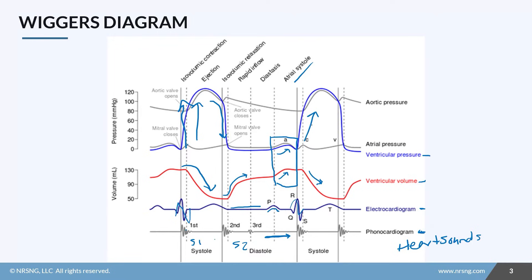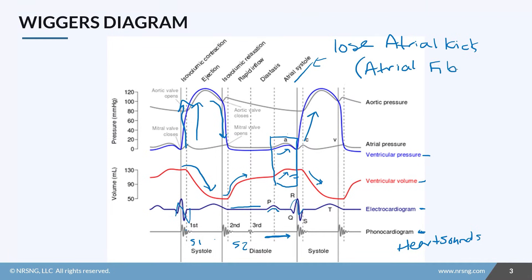Any patient who has issues with their atria and loses their atrial kick is going to have trouble with their overall cardiac output, because that last little bit of volume won't make it into the ventricles. The best example of this is somebody with atrial fibrillation. There's a cheat sheet attached to this lesson that shows you this diagram so you can really see how everything relates to each other.